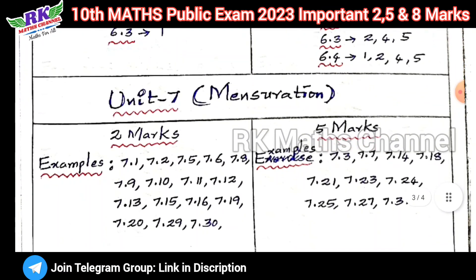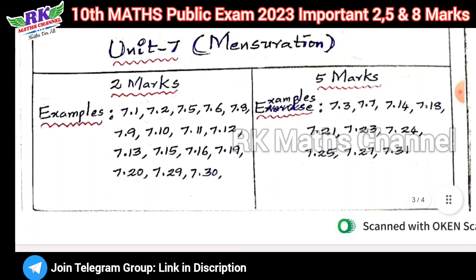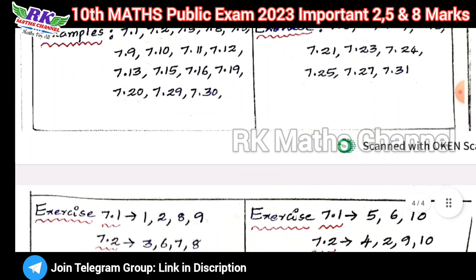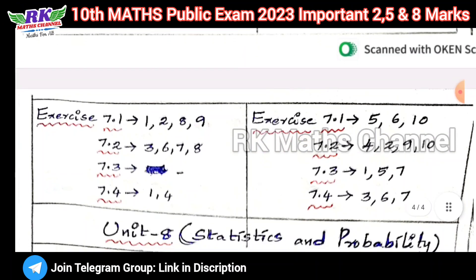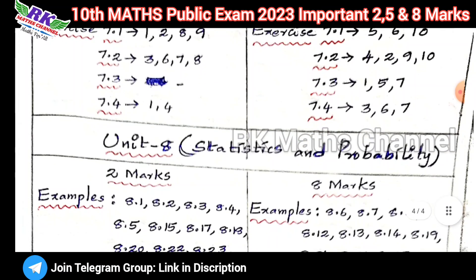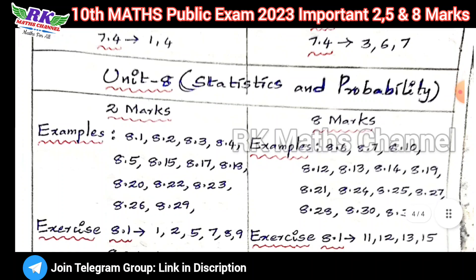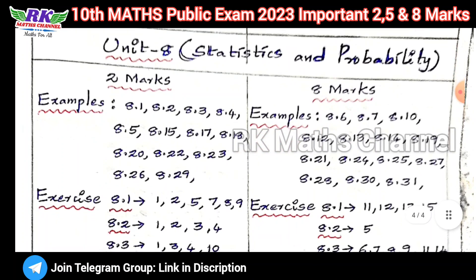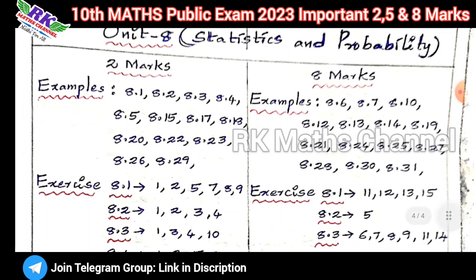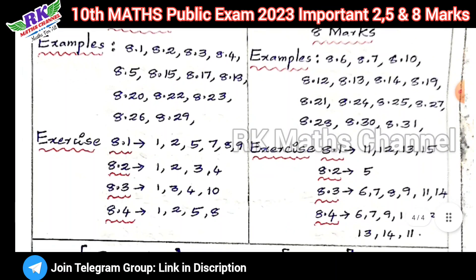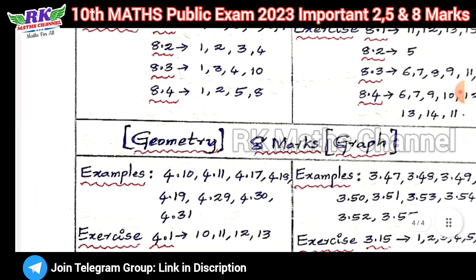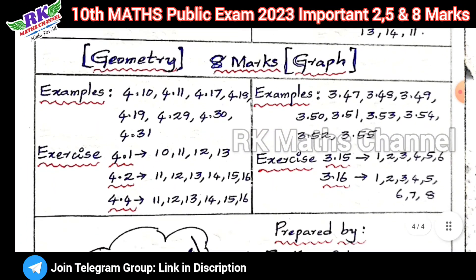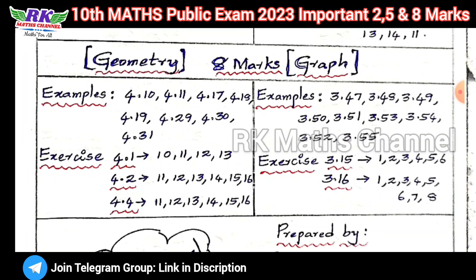Trigonometry — important questions. Next, Mensuration — important questions, examples and exercises. And here, okay, next, last one: Statistics and Probability. 5-mark and 8-mark questions — Probability important questions. Last one: Statistics and Graph.